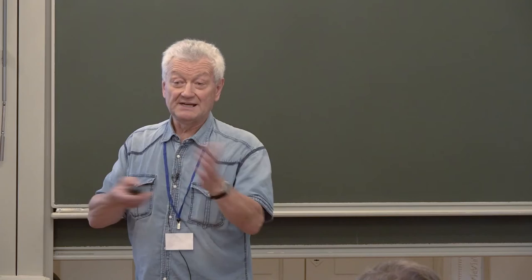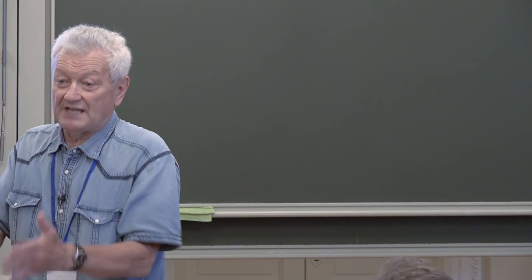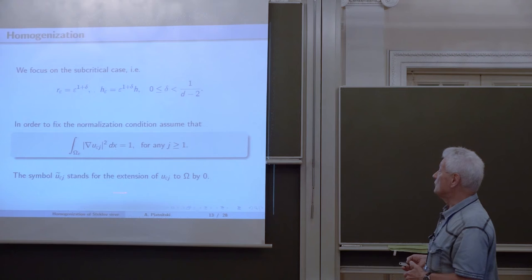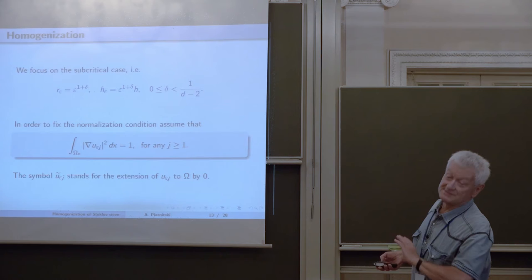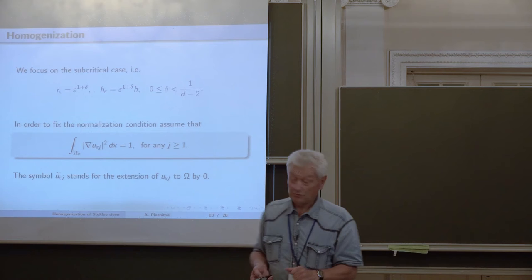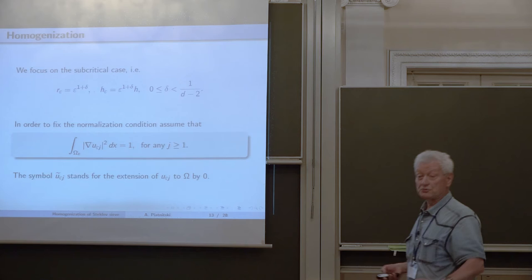In order to compare the limit function and the original function, we want them defined on the same set. But omega epsilon does not coincide with omega. We extend the eigenfunction to the whole omega — as long as we deal with L2 theory — by zero, and denote this function u-tilde to emphasize it is now defined on the whole domain.